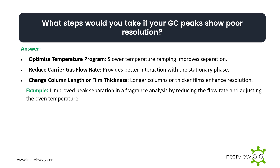What steps would you take if your GC peaks show poor resolution? Optimize the temperature program — slower temperature ramping improves separation. Reduce carrier gas flow rate — this provides better interaction with the stationary phase. Change column length or film thickness — longer columns or thicker films enhance resolution. Example: I improved peak separation in fragrance analysis by reducing the flow rate and adjusting the oven temperature.